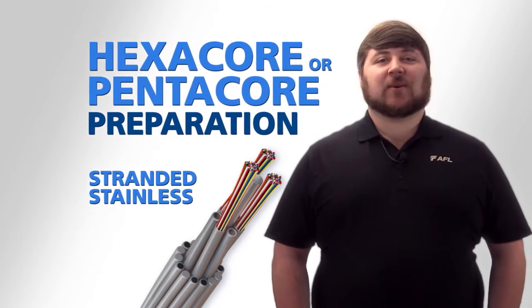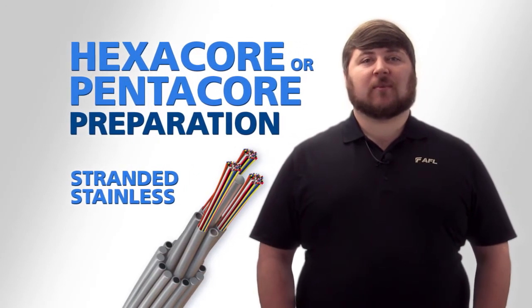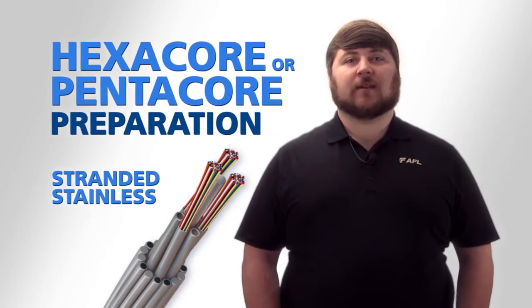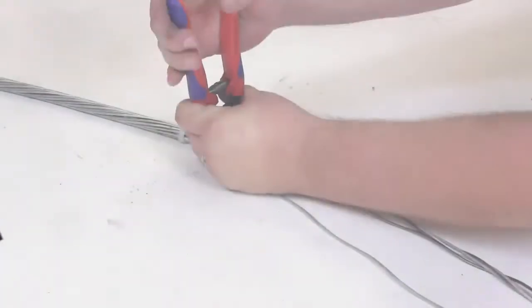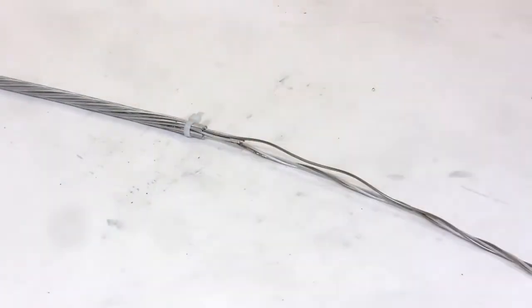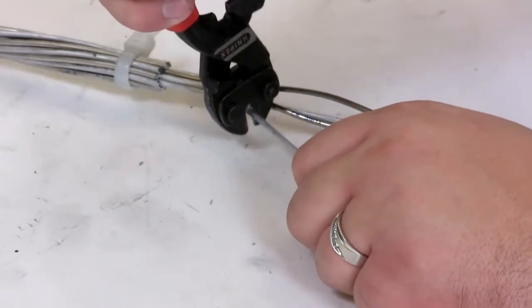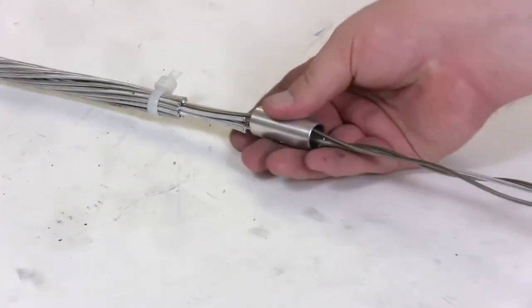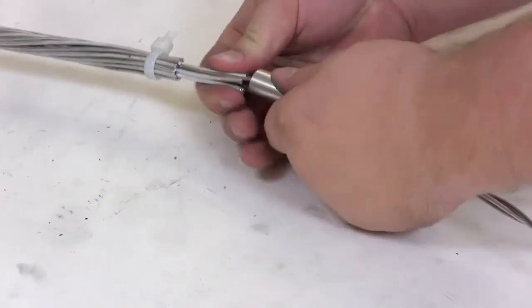For the last design family, Hexacore or Pentacore style, the cable prep process begins by removing the outer wire just like before. Once all outer layer and inner layer aluminum clad steel and aluminum alloy wires are removed, the stainless steel tubes will need to be straightened to ensure proper removal.